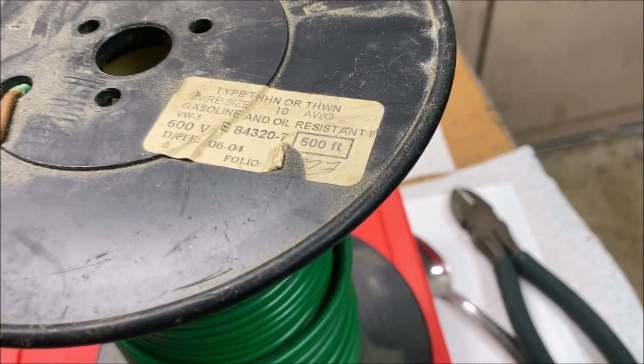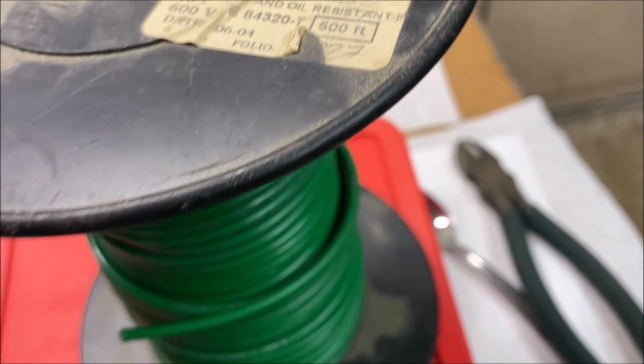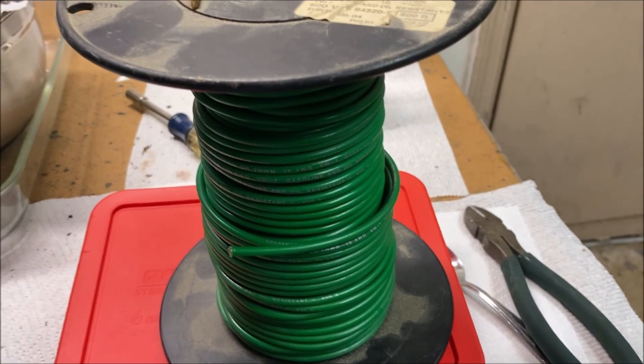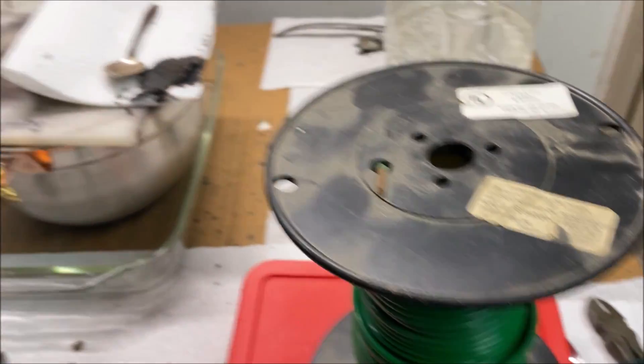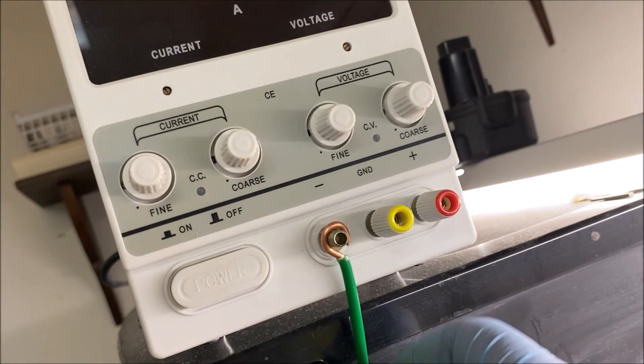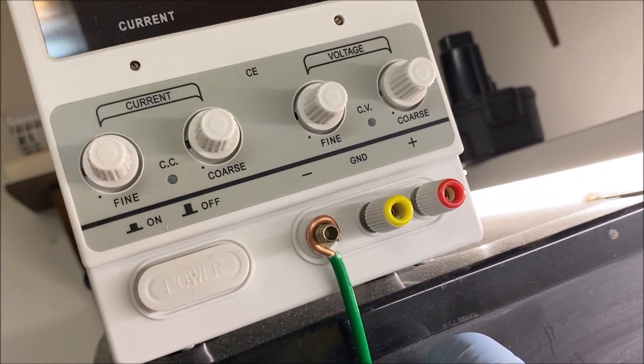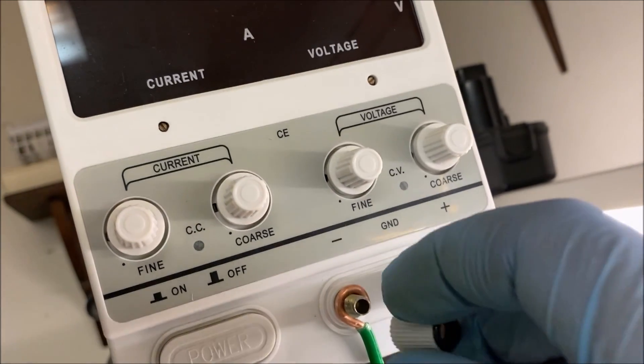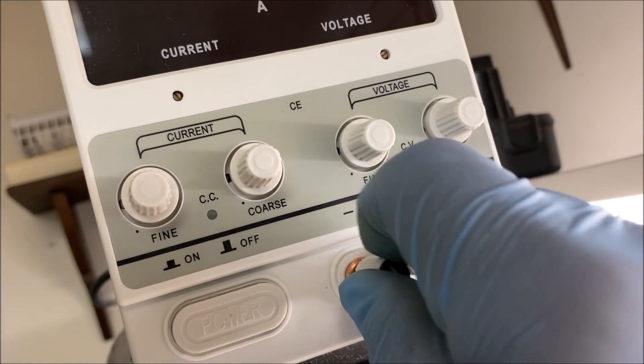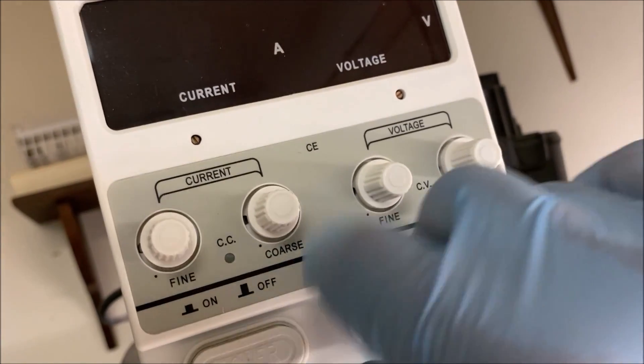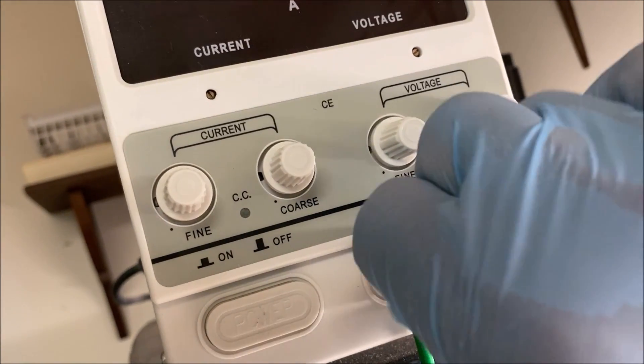This is some number 10 gauge wire that I bought at a yard sale for two bucks. It's green and I'm sure people will gig me on having green for both wires, but that's all we got to work with right now. I've made a loop here on the negative side of the power supply. We're going to connect that to the power supply nice and tight.